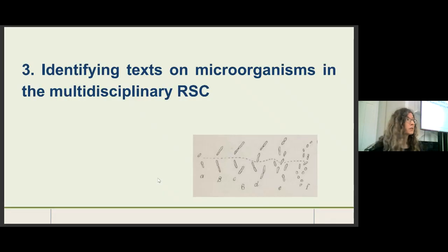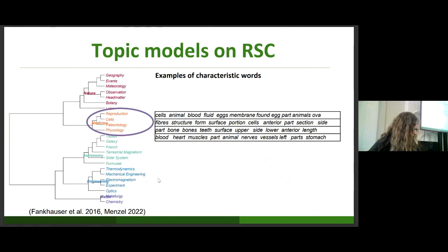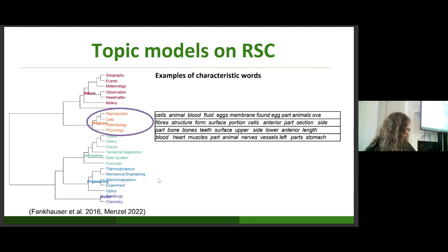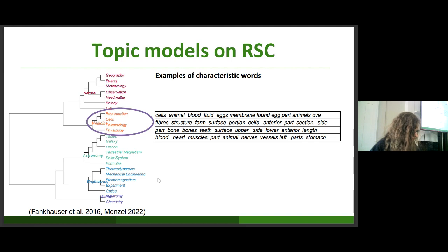How do we identify texts on microorganisms in this multidisciplinary corpus in the time span of our interest? The application of probabilistic topic models to this corpus with regard to historical medical texts has already been described previously. All texts have been assigned primary and secondary topics according to their relative importance. Here I wish to identify not medical texts in general, but early texts with relevance to the development of medical microbiology — the study of the characteristics of pathogens and other microorganisms.